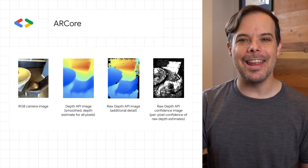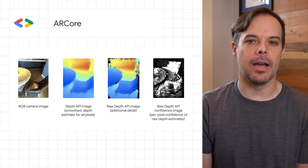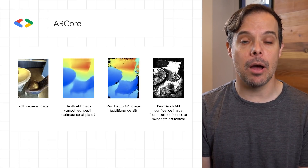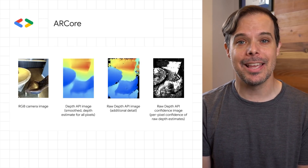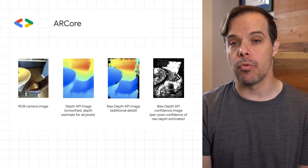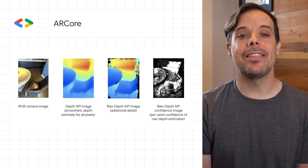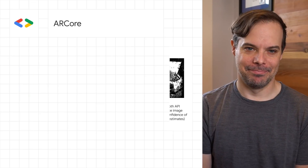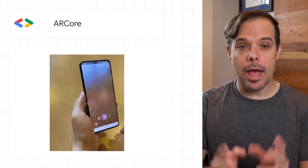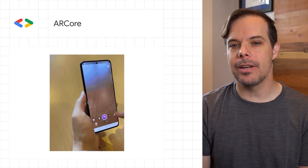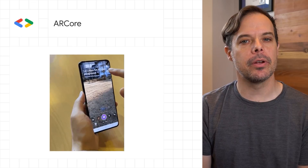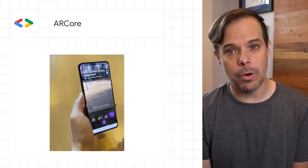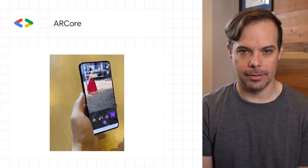ARCore introduced a new ARCore raw depth API, providing more detailed representations of the geometry of objects in the scene by generating raw depth maps with corresponding confidence images, as well as a new ARCore recording and playback API enabling you to record not just video footage, but also IMU and depth sensor data.